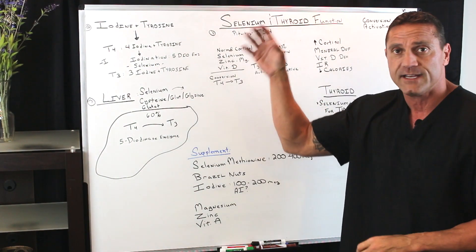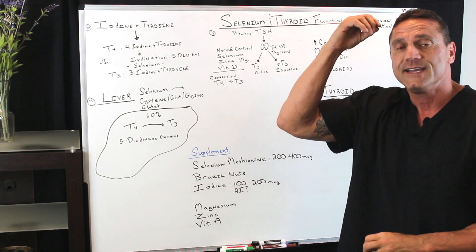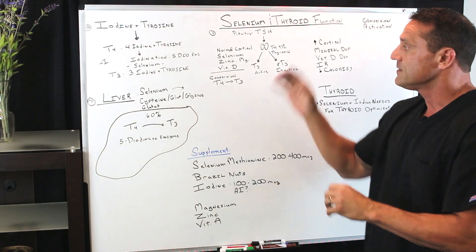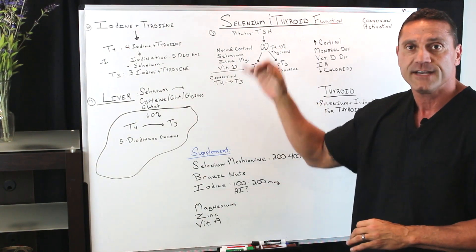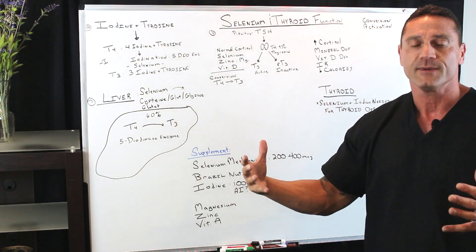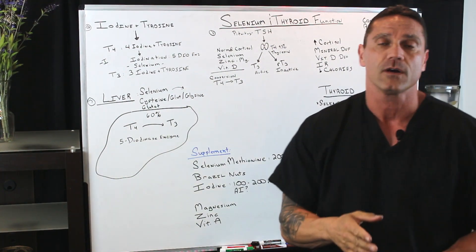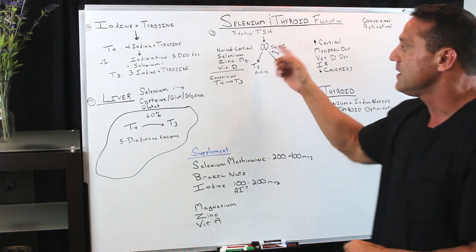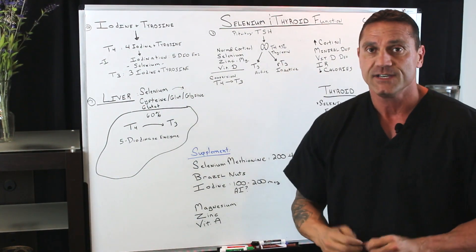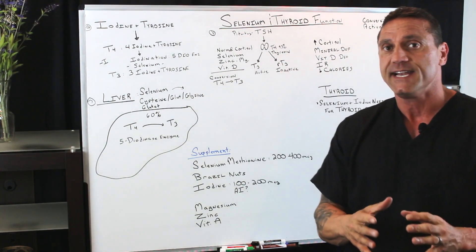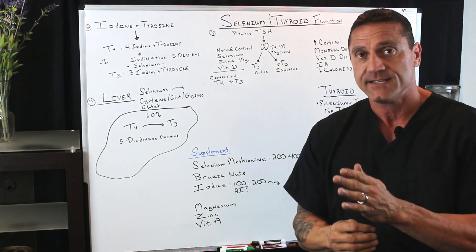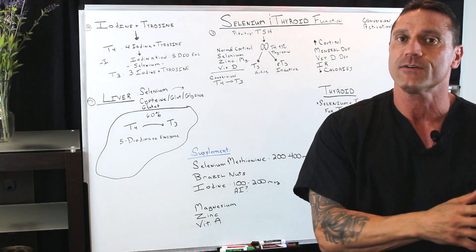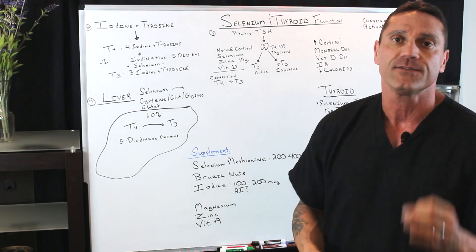In the pituitary gland in the brain, it sends a signal down to release thyroid hormone in the form of T4. T4 thyroxine is actually 93% inactive, and it has to get converted to active thyroid hormone in the form of T3.